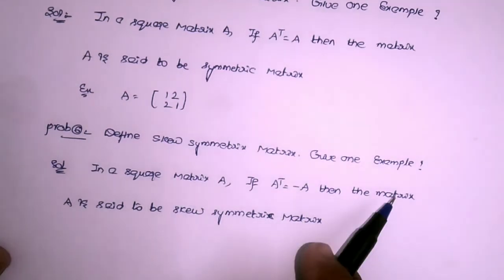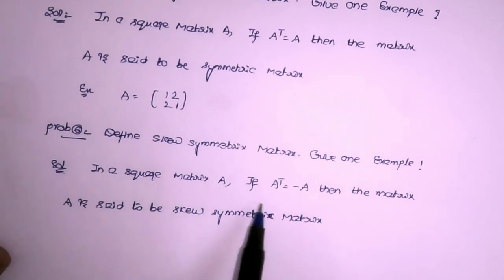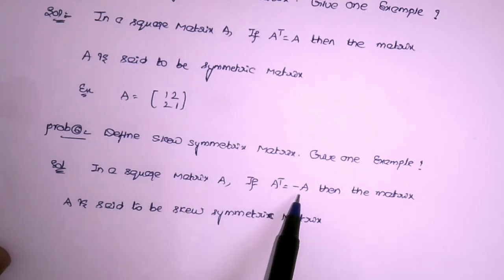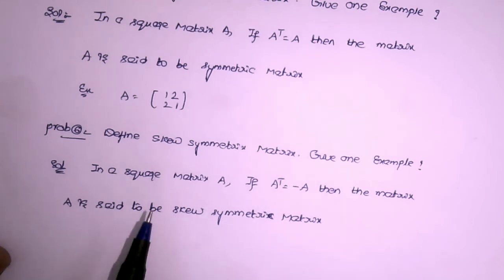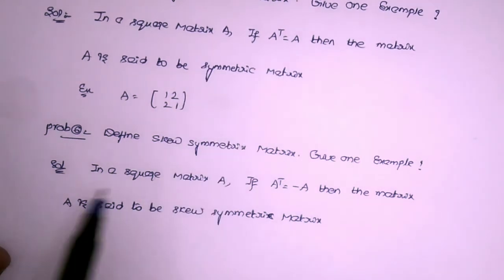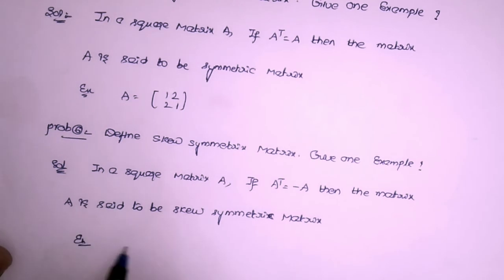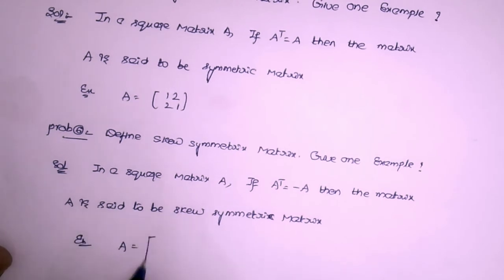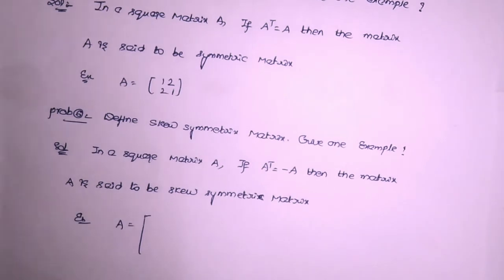Sixth question: define a skew-symmetric matrix and give one example. In a square matrix A, if A transpose equals minus A (A' = -A), then the matrix A is said to be a skew-symmetric matrix. Note: symmetric means A' = A, and skew-symmetric means A' = -A.